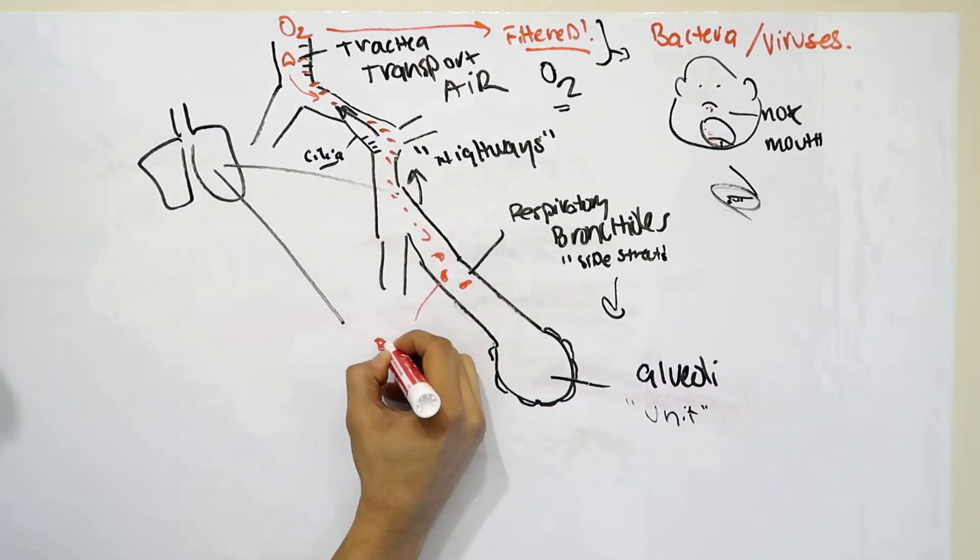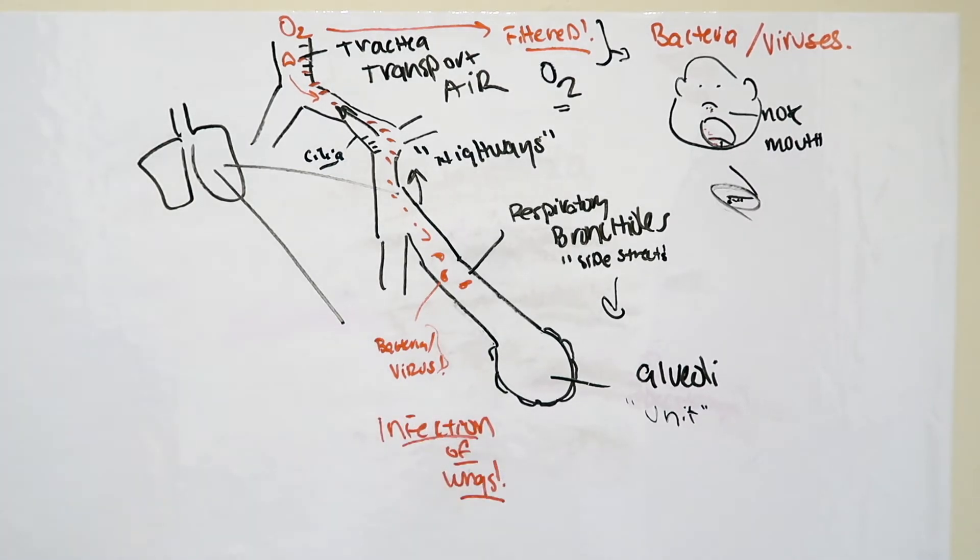Unfortunately, this system isn't perfect. And sometimes bacteria and pathogens from respiratory droplets or just from the air that we breathe can actually reach the alveoli. And this can occur in states of a weakened immune system or by some other cause. Because of the nice humid atmosphere of our lungs, these pathogens can brew an infection.